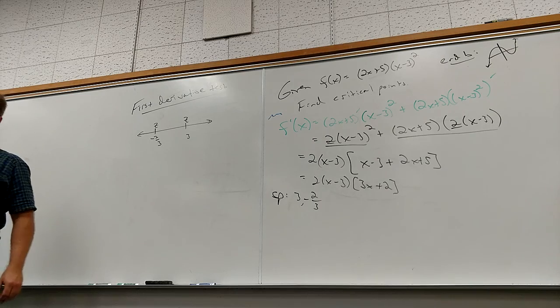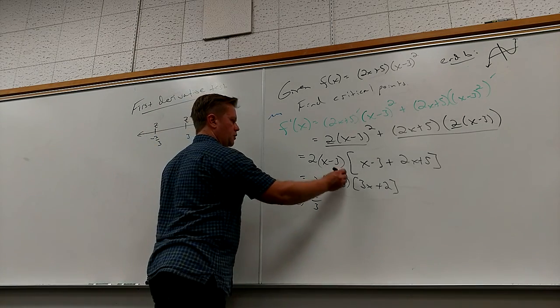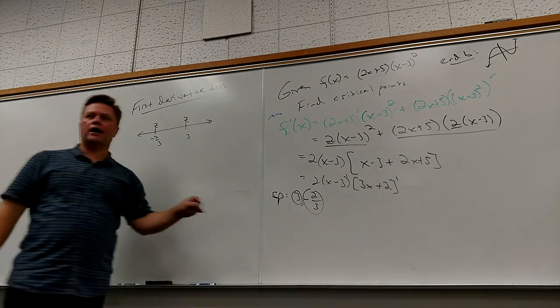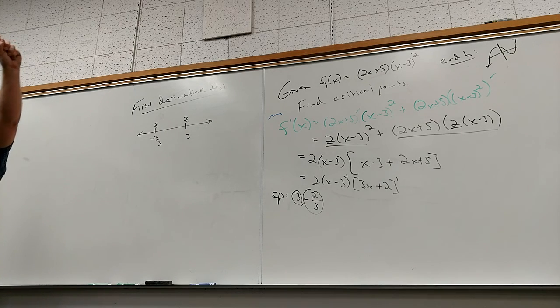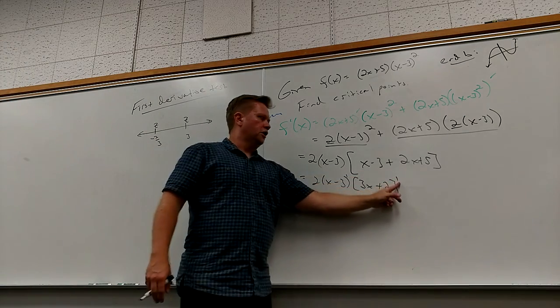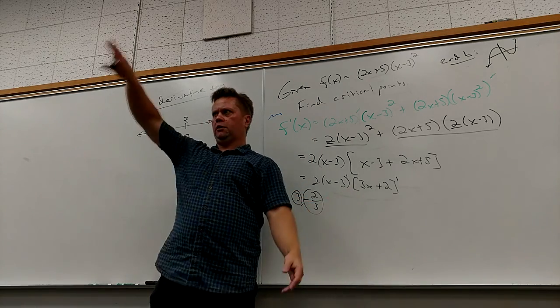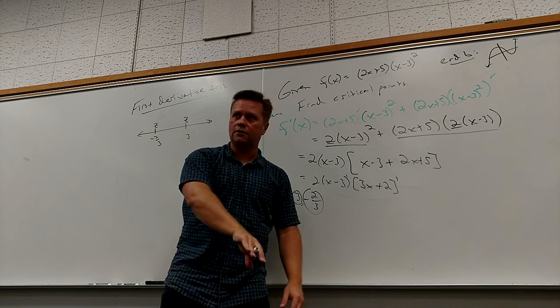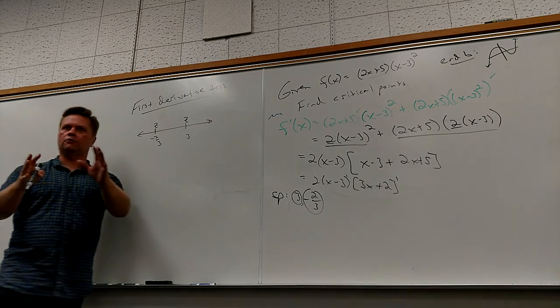This is where multiplicity really comes in handy. How often did this root show up? Once. How often did this root show up? Once. So they both have odd multiplicity, which means they will go through their root. If this was squared, would it change signs on either side? No, it would be positive on both sides. It would be like a parabola. It would touch the root, it wouldn't go through. Does this sound familiar? Through or touch, that was a big part of graphing in pre-calculus.